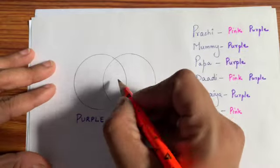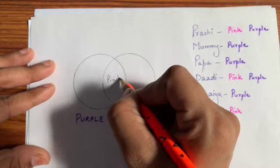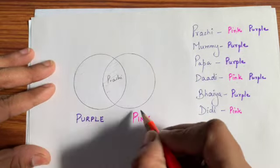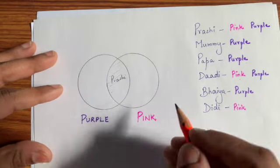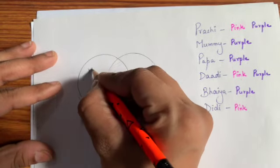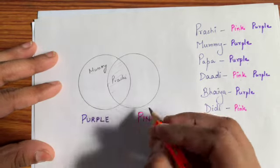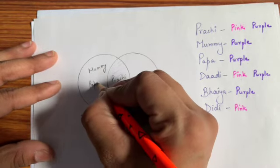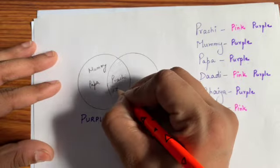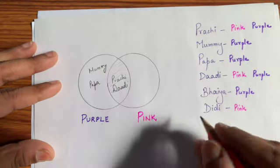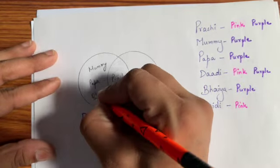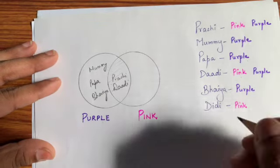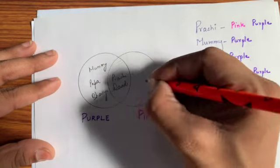Where do you like the name of Prashii? The beach will be the name of Prashii. Why? Because it's purple and pink. I like it. Mommy ko purple pasand hai to mommy yahaan pe likhayenge. Papa ko purple to papa. Dadi ko pink and purple dono to dadi. Bhaiya ko purple to bhaiya. And didi ko pink to didi.